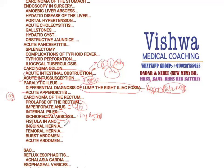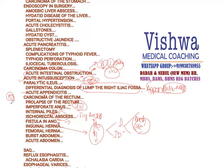Inguinal hernia and femoral hernia are very commonly asked. Don't forget the surgeries of inguinal hernia: herniorrhaphy, hernioplasty, herniotomy. Remember to write about direct inguinal hernia and indirect inguinal hernia, and discuss the mechanisms of prevention such as the shutter mechanism. Femoral hernia is also important. Burst abdomen is a condition in which a post-operative patient has given away all the sutures and the whole abdomen is opened post-operatively.